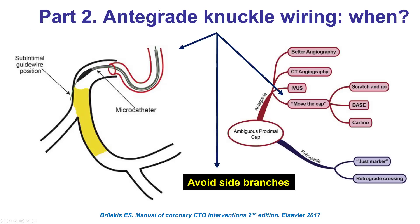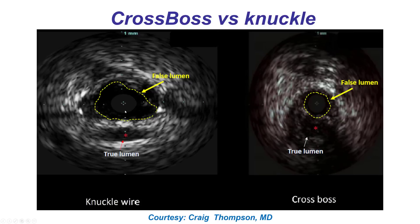Changing gears now to antegrade dissection reentry using a knuckled guide wire. This can be done when there is sub-intimal guide wire position and a long occlusion, when there are many side branches one wants to avoid, and even in cases where there is an ambiguous proximal cap. These are the so-called move-the-cap techniques, in which a knuckled guide wire is used to resolve the ambiguity and enable crossing into the distal true lumen.